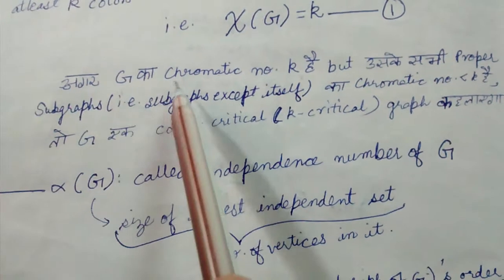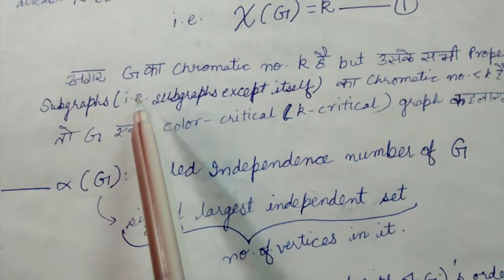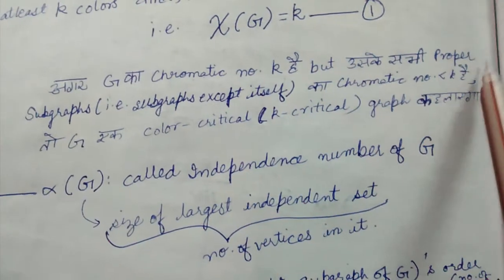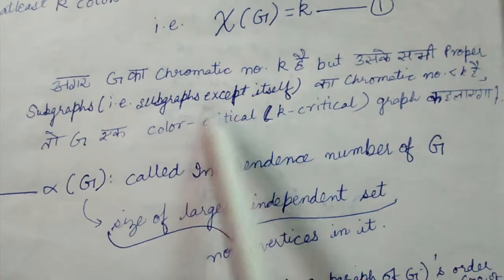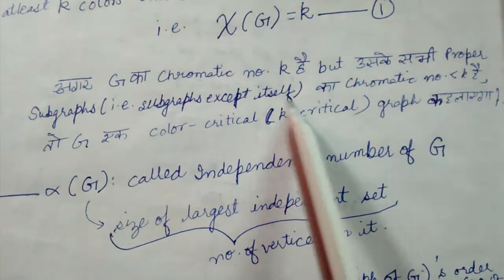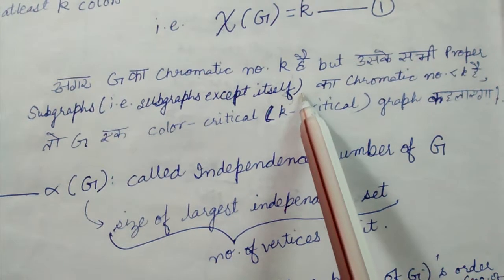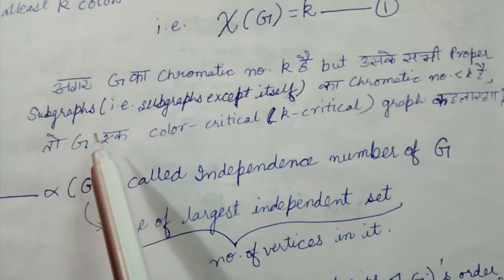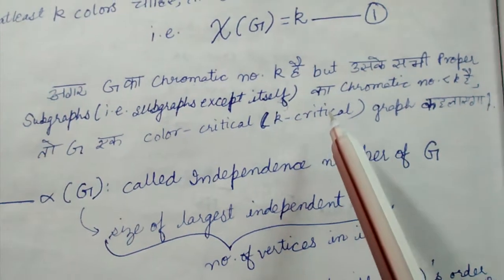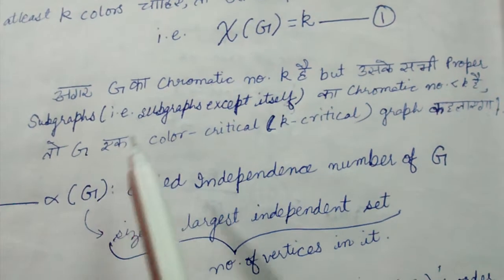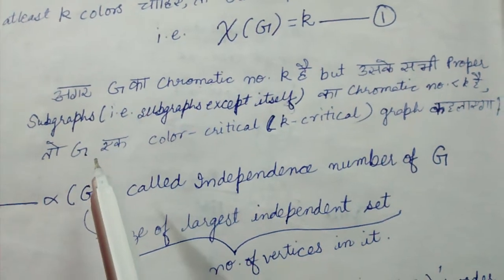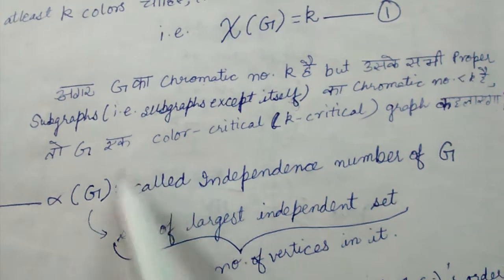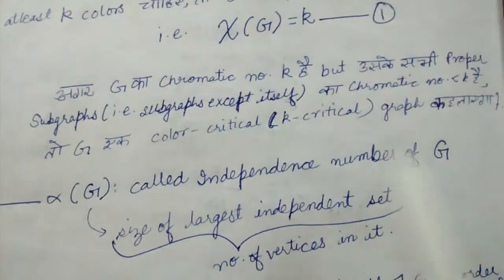One more fact: if the chromatic number of a graph is k, but the chromatic number of all its proper subgraphs — meaning subgraphs excluding the graph itself, since a graph is always a subgraph of itself — is less than k, then we call graph G a color-critical graph or k-critical graph.